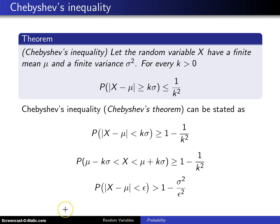Finally, the last thing you can do is you can write this quantity right here and replace k sigma with epsilon, and you will get Chebyshev's inequality looking like this.